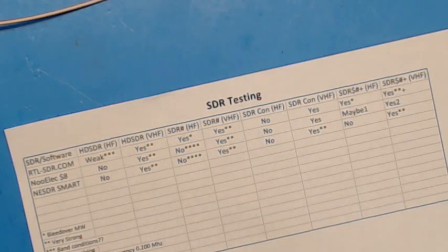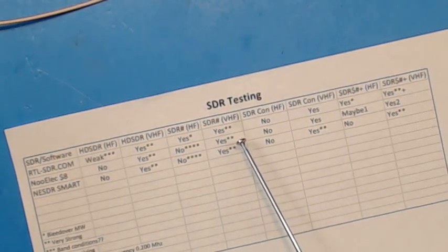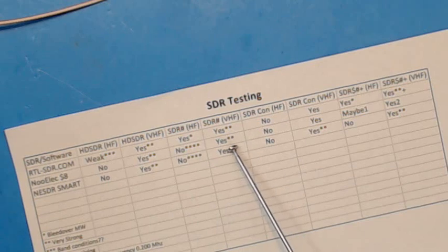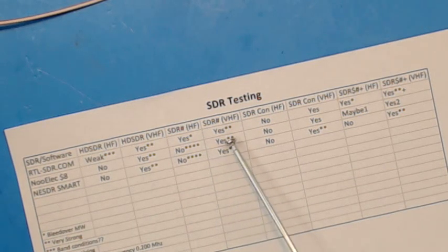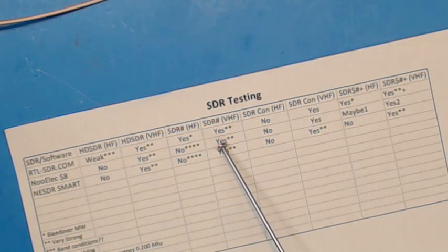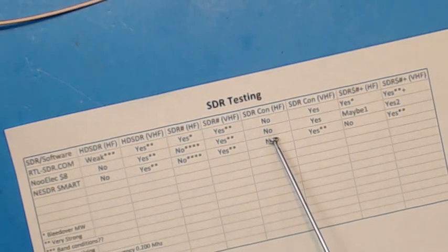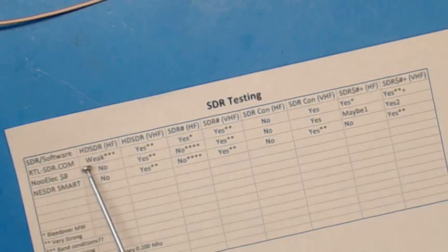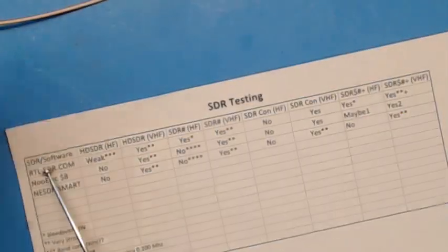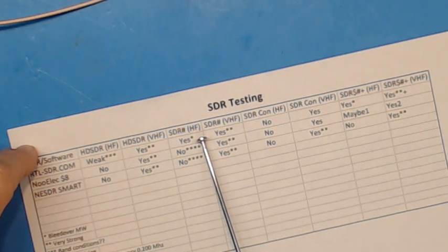All of the SDRs worked fine on VHF. The RTL-SDR, I'm trying to look at my notes here. With this dongle, this was the only one, and on HF, I was receiving lots of signals.